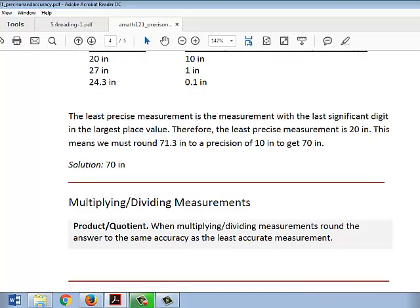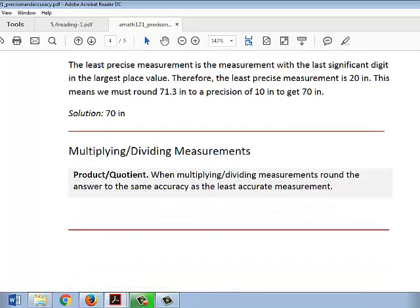Multiplying and dividing measurements is also tricky. We multiply and divide the measurements, that's the easy part. The tricky part is rounding the answer to the correct accuracy. We would round it to the same accuracy as the least accurate measurement. Accuracy, not precision.